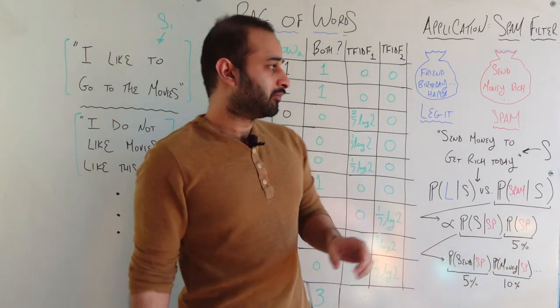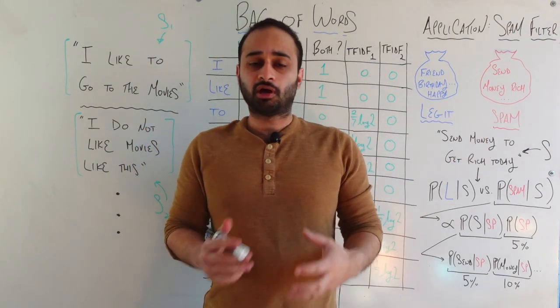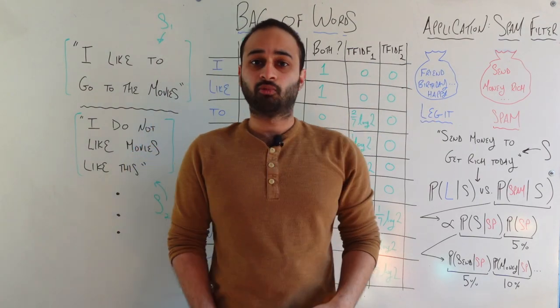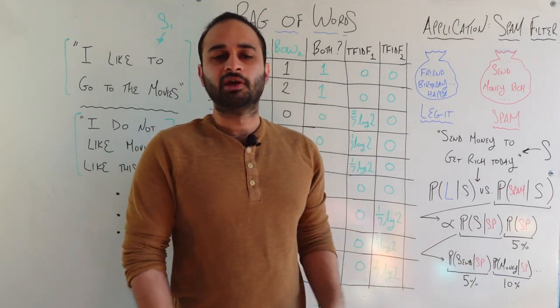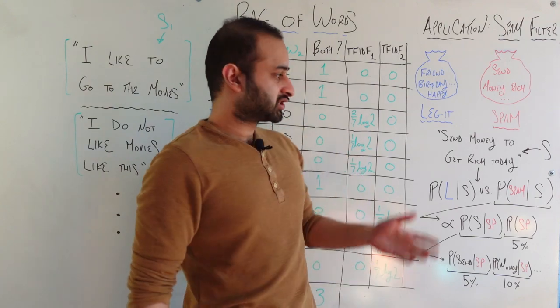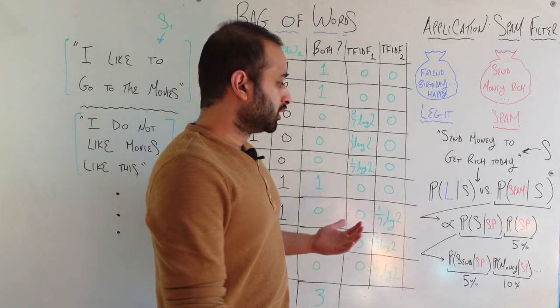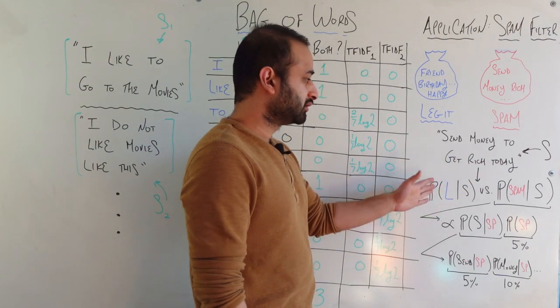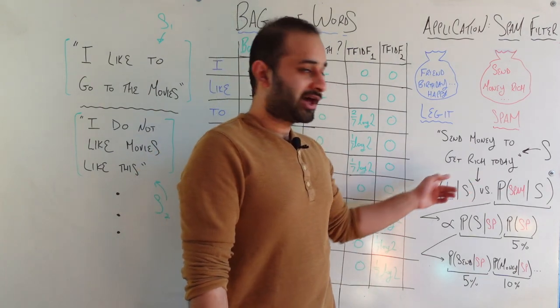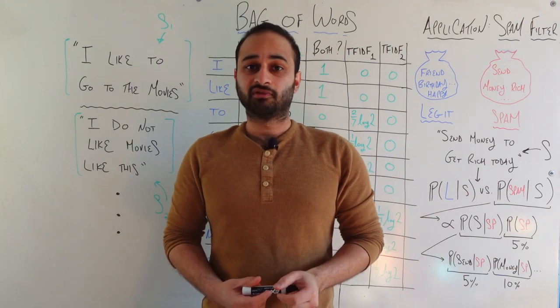So bag of words says that we have two bags, one bag for legit emails and one bag for spam emails. And the spam bag contains a lot more of certain words like send and money and rich and all these kind of scammy words than the legit one, which could contain words that are more genuine like friend or birthday or happy, things that are from people you actually know. And so when we get a new sentence, so we get a new email such as send money to get rich today. That's probably spam, but how would the spam filter with bag of words work? We would calculate the probability that it's a legit email given we get this sentence, versus the probability that it's a spam email given we get that sentence. And these two things will add up to one, so we just need to calculate one of them. Let's calculate the probability that it's a spam email given that you get that sentence.